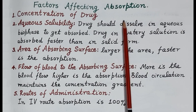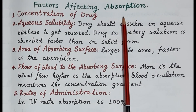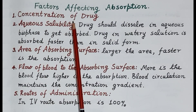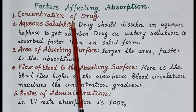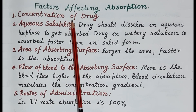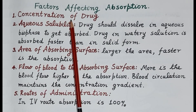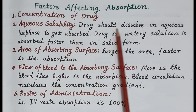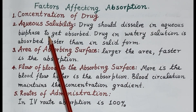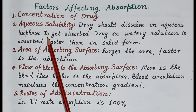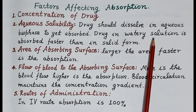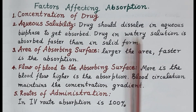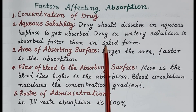Now let's discuss factors affecting absorption of drug. First is concentration of drug: drugs in higher concentration are absorbed faster, as diffusion depends upon the concentration gradient — passive diffusion and facilitated diffusion being the most common transport mechanisms. Second is aqueous solubility: drugs must dissolve in the aqueous bio phase to get absorbed, so drugs in watery solution like syrups are absorbed faster than in solid forms like tablets or capsules.